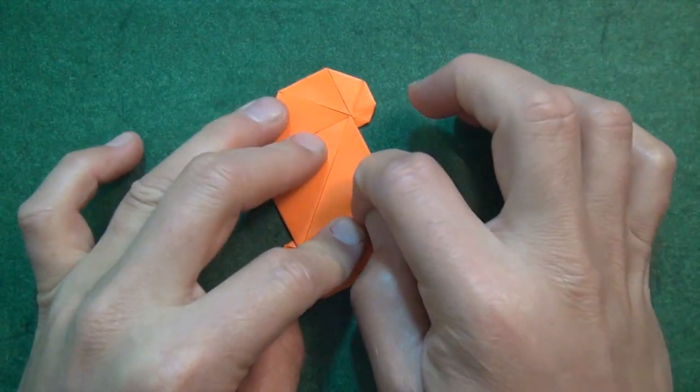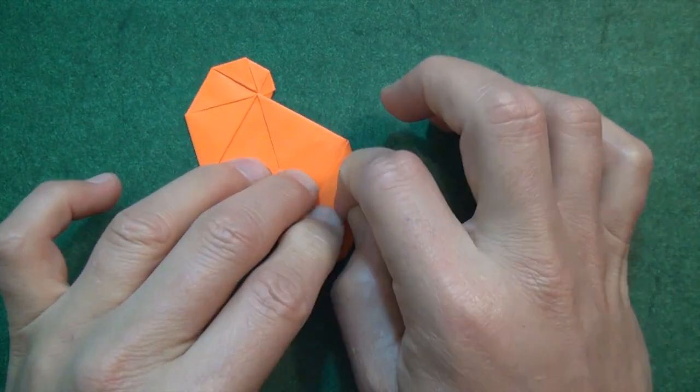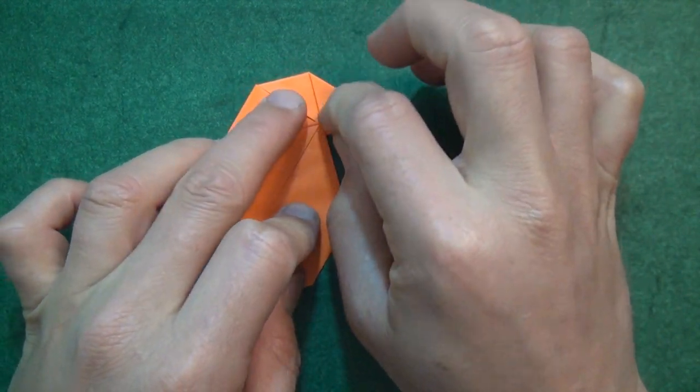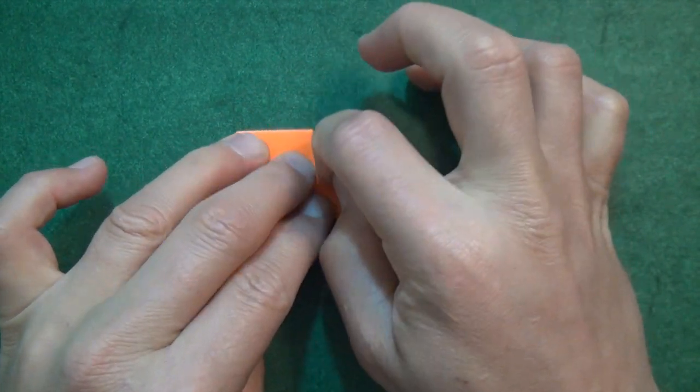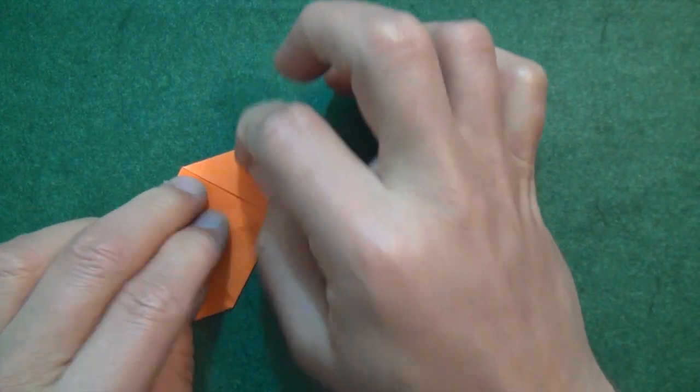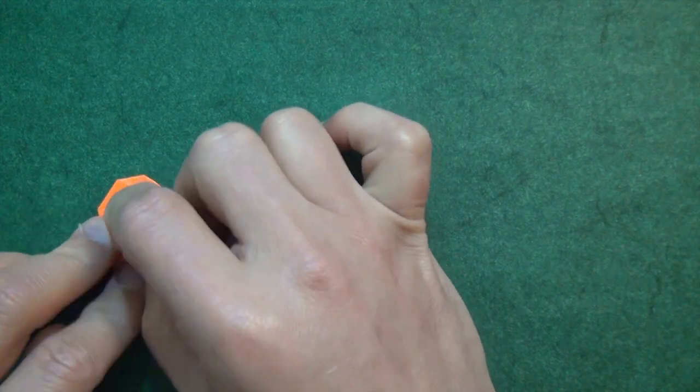And we're done except that we want to make it really flat in order to fly the best. So just crease with your fingernail around the perimeter of the model. And maybe in the middle too. Just really try to flatten it.